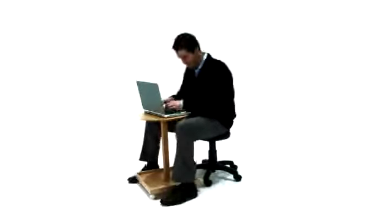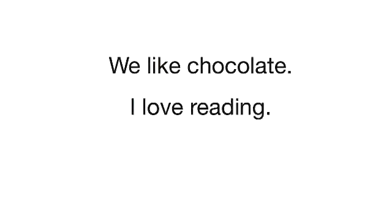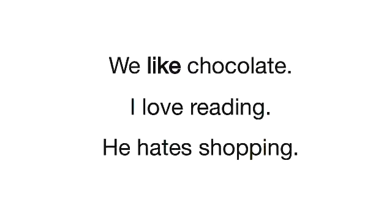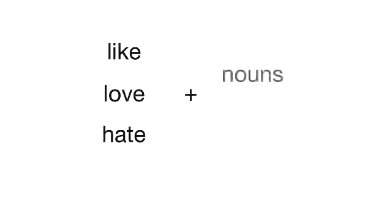I hate computers. Let's talk about the grammar in the movie. Look at these sentences. We like chocolate. I love reading. He hates shopping. Like, love, and hate can be followed by nouns or verbs. We like chocolate — chocolate is a noun. I love reading — reading is a verb. He hates shopping — shopping is also a verb. Here we use -ing on the end. You can also say, he hates to shop. Both sentences are okay.